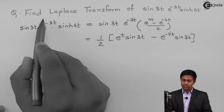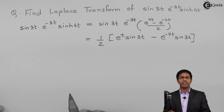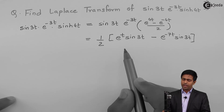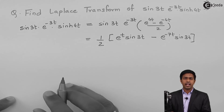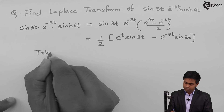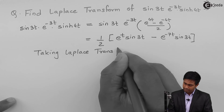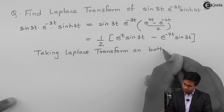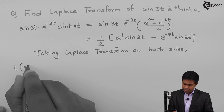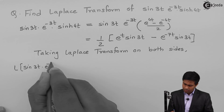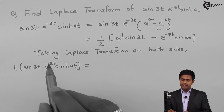So we get the simplification as (1/2)[e^t · sin(3t) - e^(-7t) · sin(3t)]. Now to get the Laplace transform of the left-hand side, we take the Laplace transform on both sides.